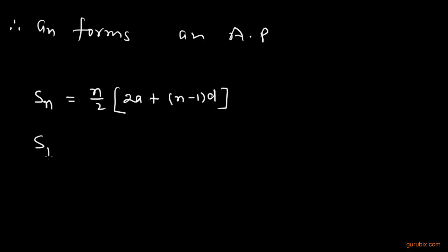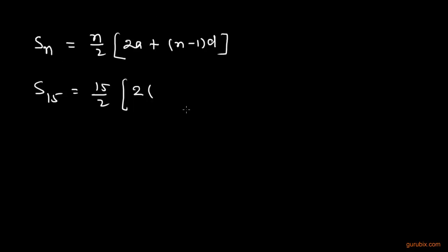Here, n is 15. So, we can write it here: 15 over 2. And a is obviously 7, and d is positive 4.